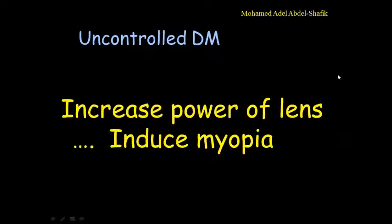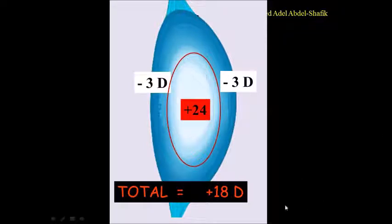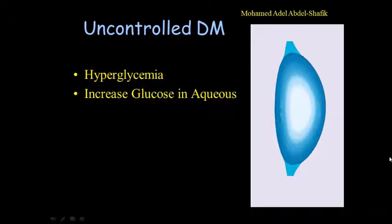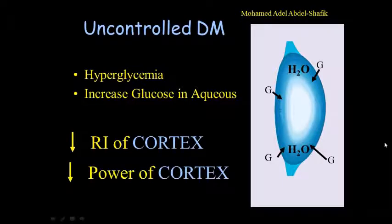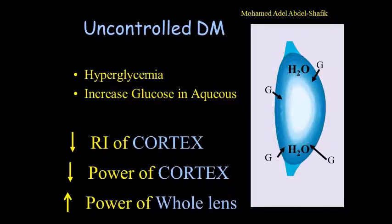Uncontrolled diabetes will result in myopia. Explanation: normally the lens has a power of plus 18. The nucleus is plus 24. The cortex in front and the cortex behind each is minus 3. So the total power of the whole is plus 18. If you have uncontrolled diabetes, the patient will suffer from hyperglycemia. There will be more glucose in the aqueous. Glucose in the aqueous will find its way to get into the cortex and it's going to take water with it. So there will be hydration of the cortex. Hydration of the cortex will result in decrease of the refractive index of the cortex. Hence the power of the cortex will be less. So the total power of the lens will be more.